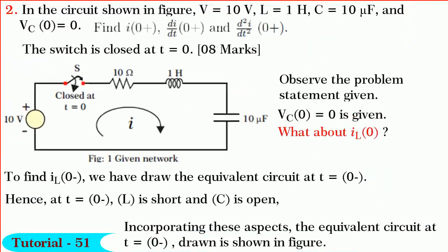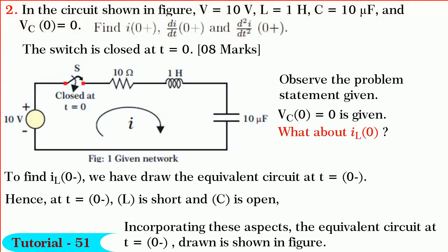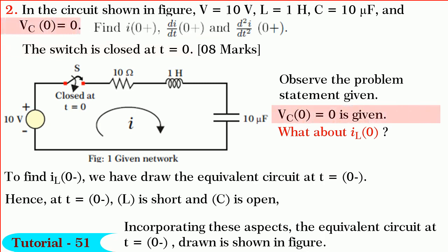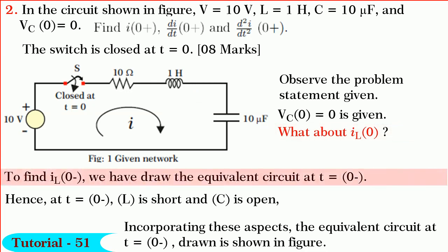Friends, next we shall solve a second question to find i(0+), di/dt(0+), and d²i/dt²(0+) in the circuit shown in figure. It is given that the switch is closed at t equals 0. The initial value across the capacitor vc(0) is equal to 0. But what about iL(0)? It is not given, so to find iL(0-) we have to draw the equivalent circuit at t equals 0 minus.